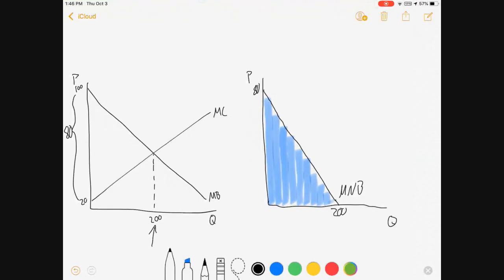So the marginal net benefits curve in a very real way is just like if we looked at this triangle here and melted it down and just put it on the axis just measuring Q and P.